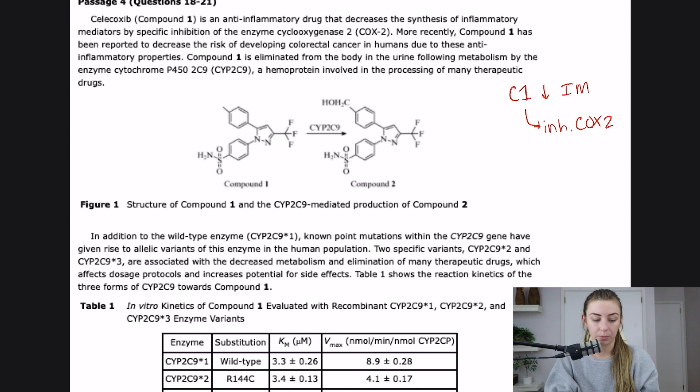More recently, compound one has been reported to decrease the risk of developing colorectal cancer in humans due to these anti-inflammatory properties. Compound one is eliminated from the body in the urine following metabolism by the enzyme cytochrome P452C9. CYP2C9 metabolizes C1, a hemoprotein involved in the processing of many therapeutic drugs. We have a figure here. The figure caption is structure of compound one and the CYP2C9 mediated production of compound two. So I guess this is the metabolism they were talking about. It looks like the only change is the addition of this alcohol group right here.